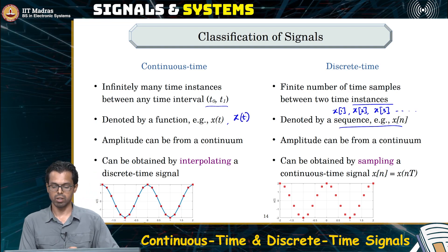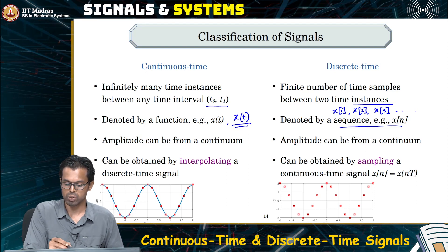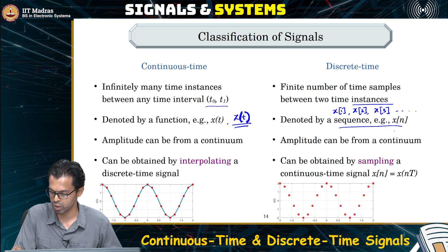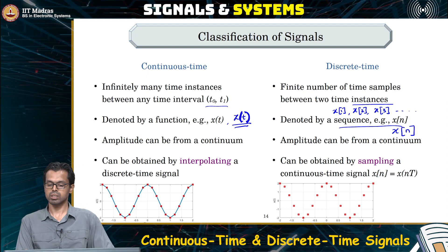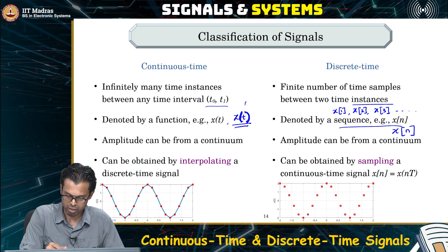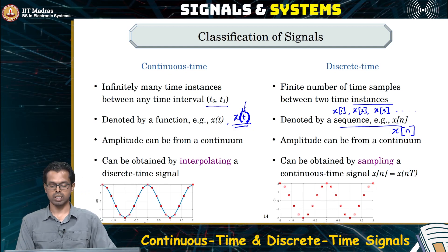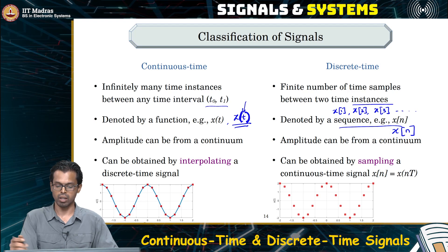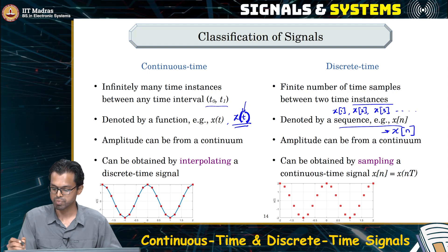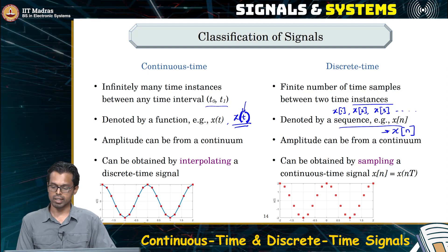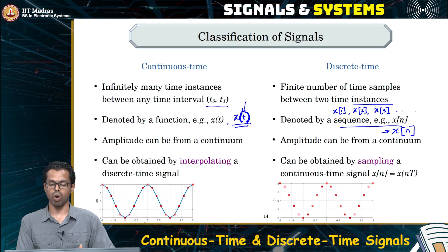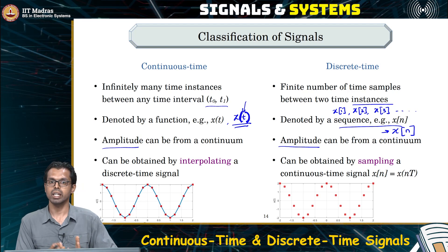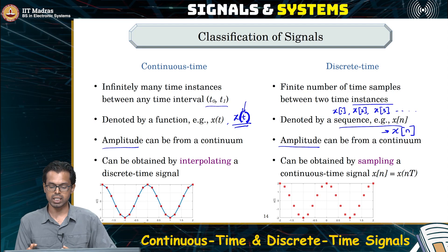A continuous time signal is represented as a function x(t). Note the difference in notation: curly braces are typically used to denote a continuous time signal, whereas square brackets denote a discrete time signal. In both cases, we are not constraining anything on the amplitude — we are constraining only the independent variable, not the dependent variable. The independent variable is discretized, not the dependent variable, so the amplitude can still be from a continuum.